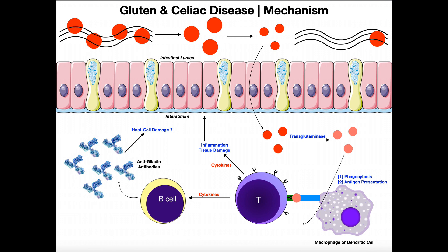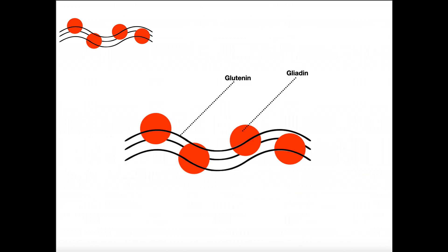Before we go any further, we need to have an understanding of what gluten is. Gluten is a real thing and it's found in wheat products. Wheat is a crop that is processed into many things including bread and really anything that comes from bread. Those wheat products have this conglomerate of proteins — this whole thing is basically gluten.